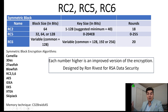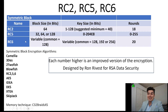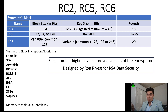RC5 has a block size of 32, 64, or 128 bits, with a key size ranging anywhere from 0 to 2048 bits, and rounds anywhere from 0 to 255. RC6 has a variable block size but is commonly 128 bits, and the key size is variable but commonly 128, 192, or 256 bits, with 20 rounds.